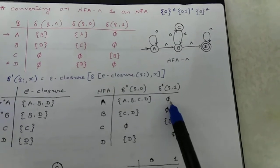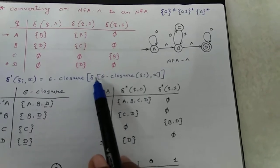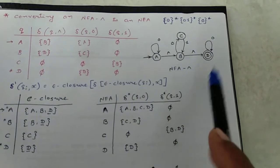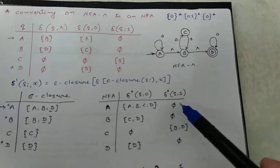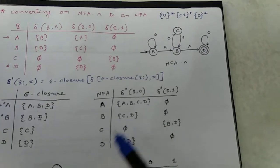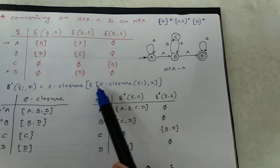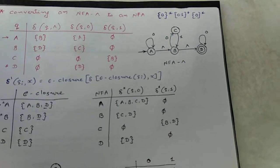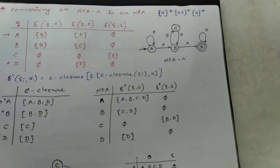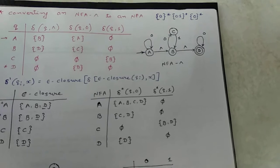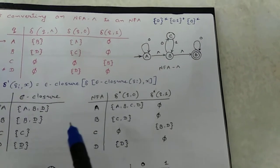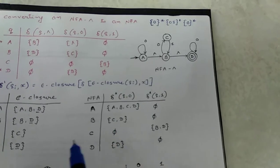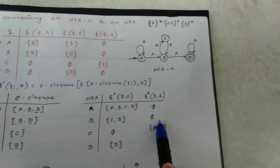For input 1: epsilon closure of transition function — epsilon closure of A on 1. A to 1 has no transition, so it is the empty state. Epsilon closure of the empty state is the empty state. Then find epsilon closure of δ(ε-closure(B), 0): B→0 reaches state C and D. Epsilon closure of {C, D} is the states themselves. For B to 1, there is nothing, so it is the empty state.